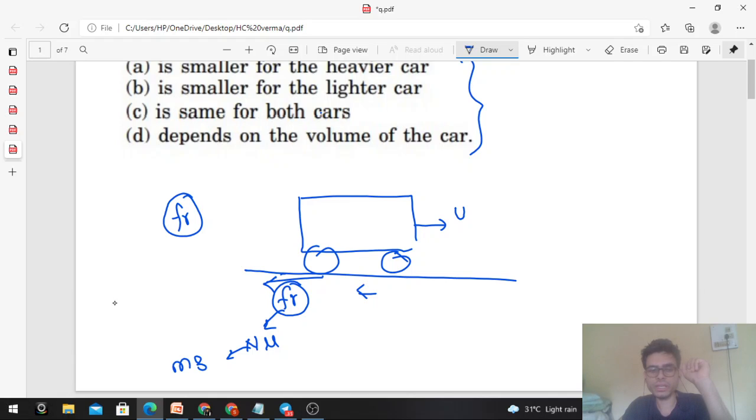So this is the value of friction. Friction limiting will apply for minimum stopping distance because you need maximum retardation - or backward acceleration, or negative acceleration. When maximum force acts in backward direction, then the distance the car moves before coming to rest - that is minimum stopping distance.